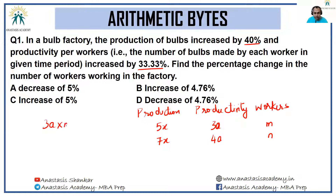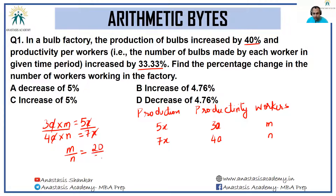We have 3a × m = 5x and 4a × n = 7x. We only need the percentage change in the number of workers, so we need m by n. Dividing the first equation by the second, a and a cancel, x and x cancel, giving m/n = 20/21. Previously you had 20 workers, now you have 21, so the increase is 1/20 = 5 percent. The answer is option C.